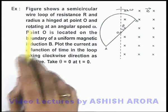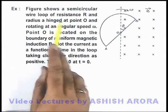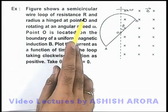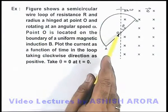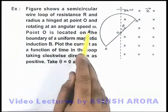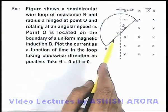In this example, the figure shows a semicircular wire loop of resistance R and radius a, hinged at point O and rotating at an angular speed omega, which we can see here in the figure.